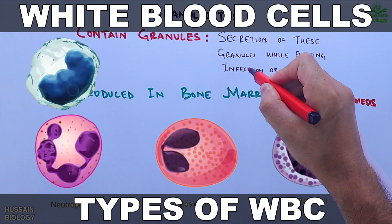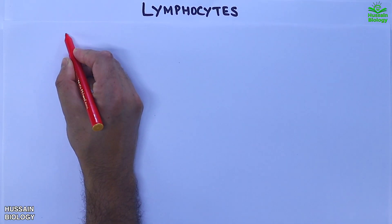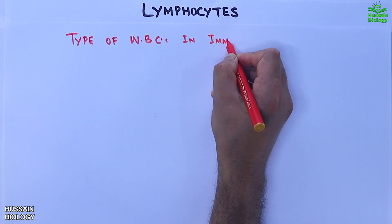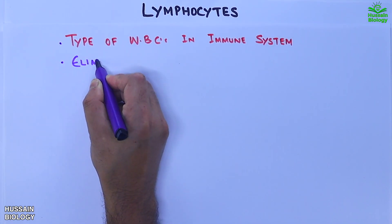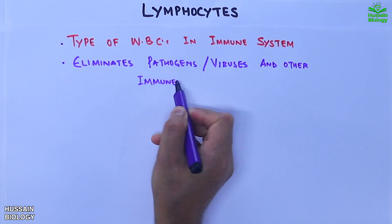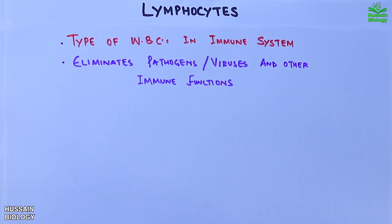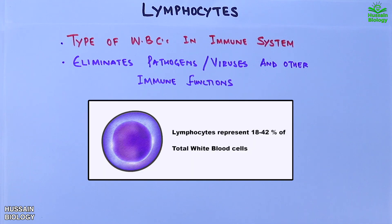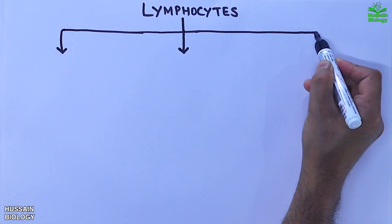In the previous video we discussed about the white blood cells and its types. Now in this video we'll be discussing about lymphocytes — a type of WBC in the immune system that eliminates pathogens, viruses, and other foreign bodies, and also has some other immune functions. The lymphocytes represent about 18 to 42 percent of total white blood cells.